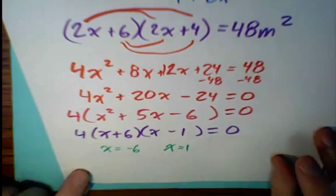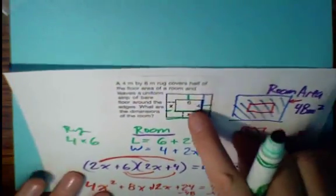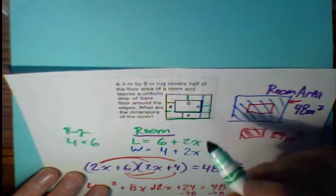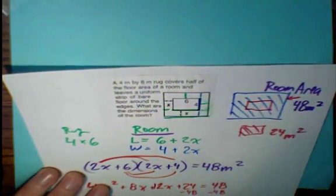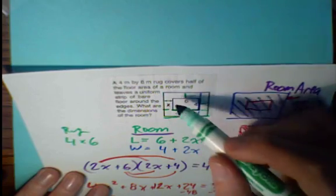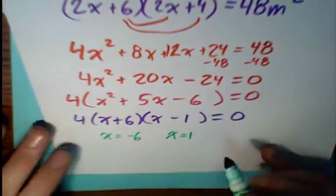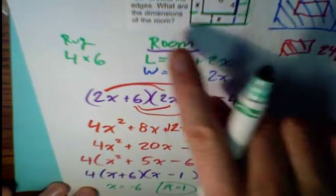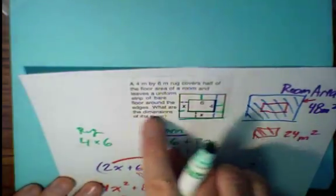But if you go back to the original problem, does negative 6 make sense? Negative 6 cannot be the length of the bare strip. So the actual answer is this. And it says, what are the dimensions of the room?